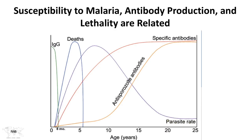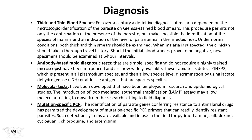Classically, thick and thin blood smears have been the diagnostic approach for over a century. A Giemsa stain is applied and the blood is examined for parasites. The advantage is that you can make a diagnosis and, particularly on the thin smear, identify the species of malaria to guide therapy, though sensitivity is limited and smears should be repeated at 6-hour intervals when highly suspicious.